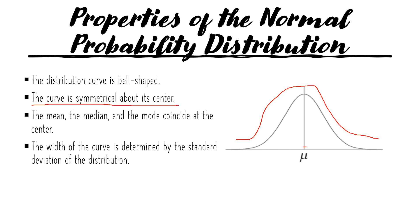Something is symmetrical when it is the same on both sides. For example, a sheep has symmetry — a central dividing line, or mirror line, can be drawn on it to show that both sides are exactly the same. That is why your normal curve is symmetrical about its center.